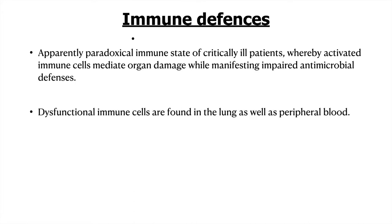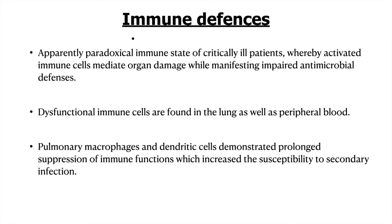These dysfunctional immune cells are found in the lungs as well as in peripheral blood. Pulmonary macrophages and dendritic cells demonstrate prolonged suppression of immune functions, which increases susceptibility to secondary infections and development of VAP.